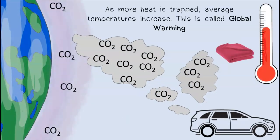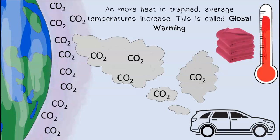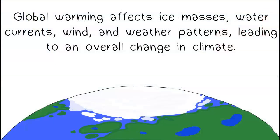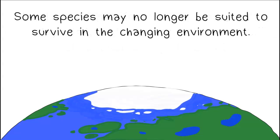As more heat is trapped, average global temperatures increase. This is called global warming. Global warming affects ice masses, water currents, wind, and weather patterns, leading to an overall change in climate. Some species may no longer be suited to survive in the changing environment.